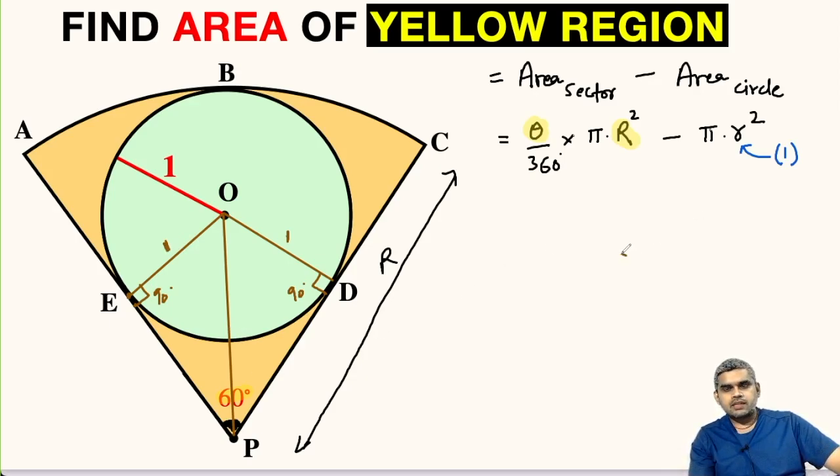We know a theorem that if we have a circle and outside it we have a point, then if we draw any two tangents on the circle, the length of these two tangents are equal. So this PD distance will be equal to PE.